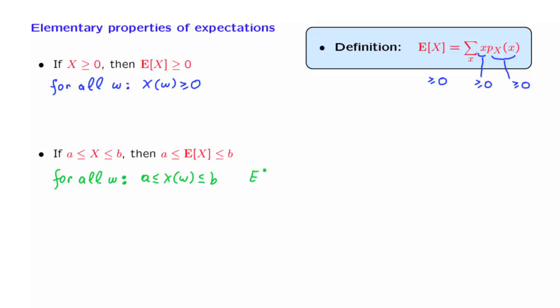In this case, we argue as follows. The expected value, by definition, is a sum over all possible values of the random variable of certain terms. Now, the possible numerical values of the random variable are all of them, at least as large as a. So this gives us an inequality of this type.